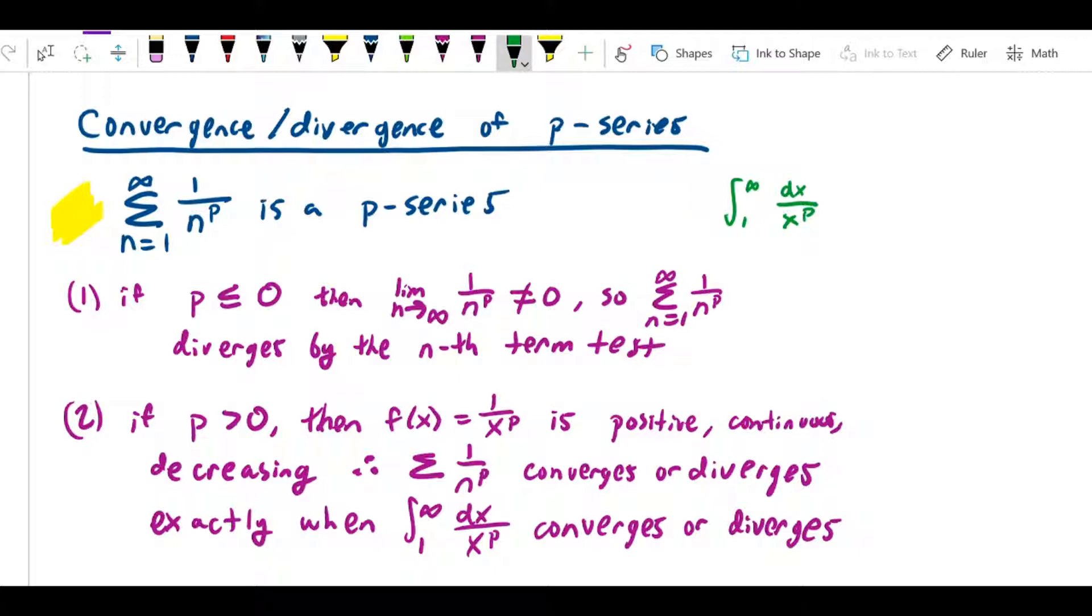First of all, let's imagine that p is less than or equal to 0. If p is less than or equal to 0, then we can demonstrate algebraically that the limit as n approaches infinity of 1 over n to the p is not equal to 0. In other words, if I take the general term and find its limit, we don't get 0. We learned in the last section that if the limit of the underlying sequence is not 0, then by the nth term test, the series itself must diverge. So if p is less than or equal to 0, then we know this series diverges.